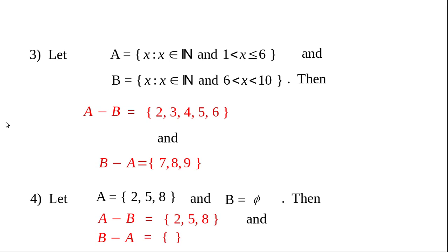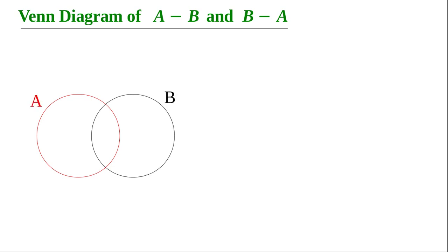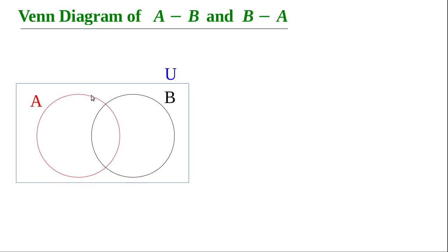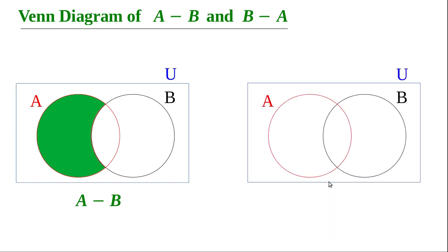Now let us discuss the Venn diagram of A minus B and B minus A. To draw the Venn diagram of A minus B, first draw a circle to represent A and another circle to represent B. Don't forget to draw the universal set using a rectangle. We want to shade the portion A minus B — that is the portion in A but not in B. Remove the overlapping portion from A. Then A minus B equals this shaded portion. I use green color to denote the shaded region as A minus B.